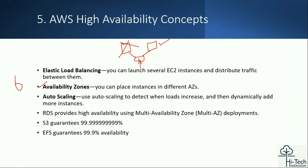The second high availability strategy is Availability Zones, which is the basic fundamental of the AWS data center itself. AWS is located in multiple Availability Zones — AZ one, AZ two, AZ three — and per region a minimum of three availability zones, going up to five. This is a major factor for high availability in AWS.